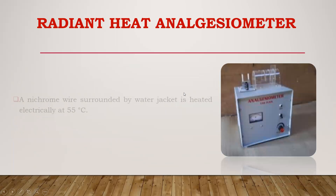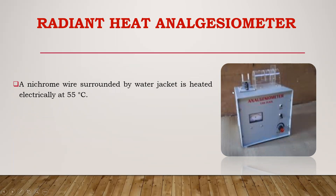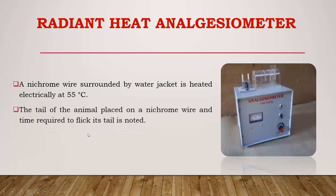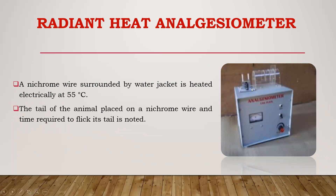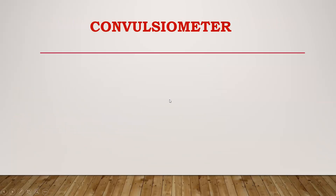The other analgesiometer is the radiant heat analgesiometer. In this instrument, a nichrome wire is provided and this wire is surrounded by a water jacket to prevent heating of the surrounding area. The temperature provided is 55 degrees centigrade. The tail of the rat or mice is placed on the nichrome wire and the time required to flick or remove the tail is noted. The cutoff time for this experiment is also 20 seconds. Separate videos of the actual experiment performance for both analgesiometers are already uploaded on the channel.